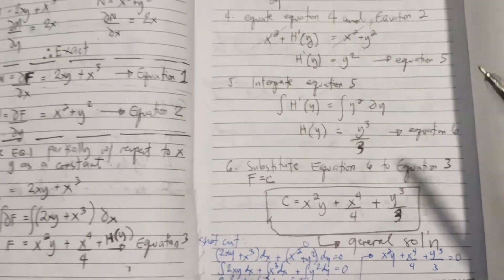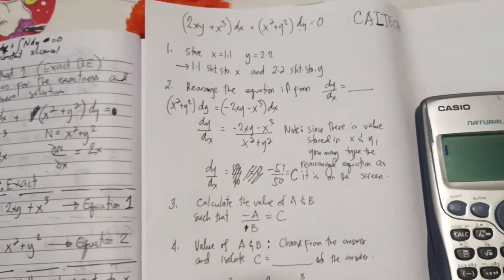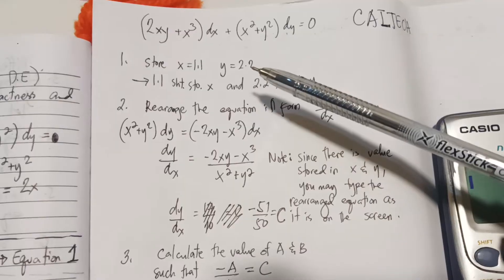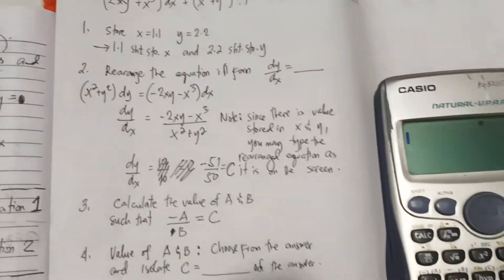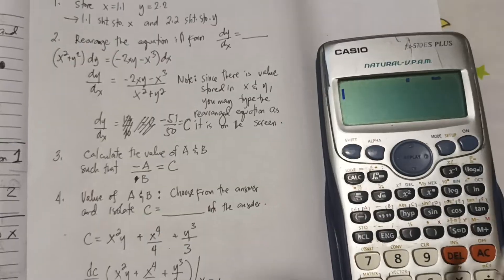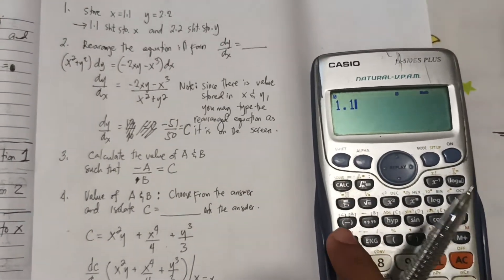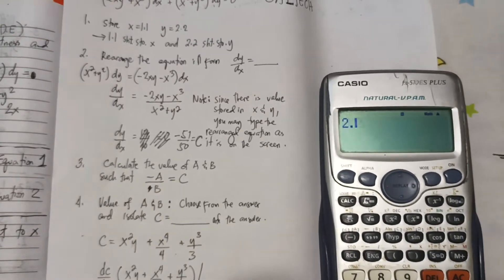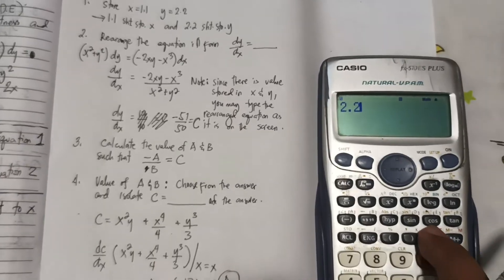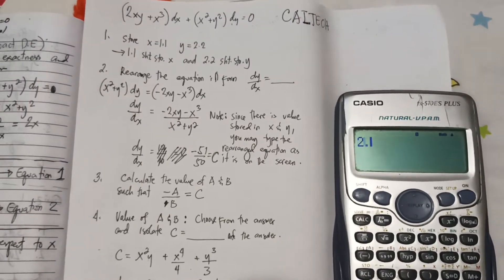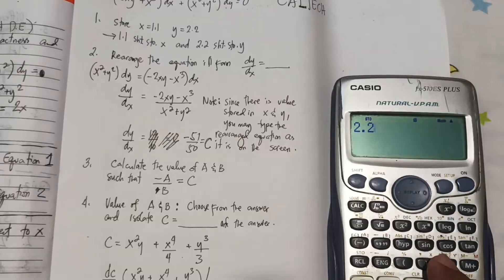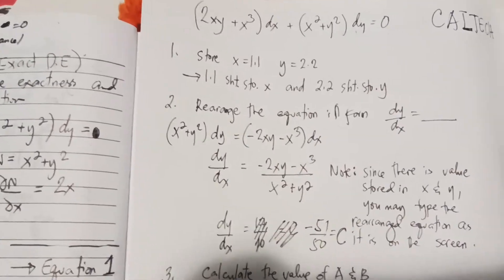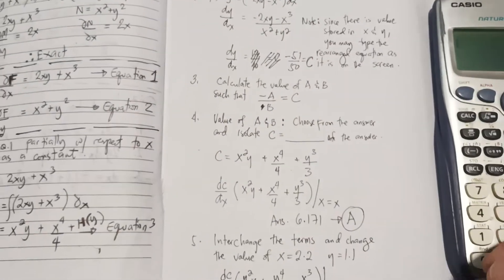Now, what about the calculator technique? The first thing to do is to store the value x = 1.1 and y = 2.2 on the calculator. So we have 1.1, shift store at x, and 2.2, shift store at y. Note that we have 6 steps.